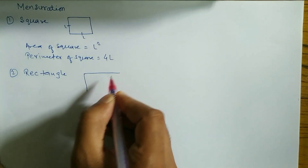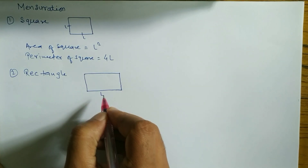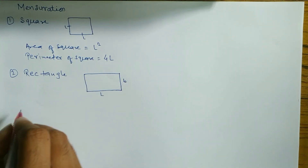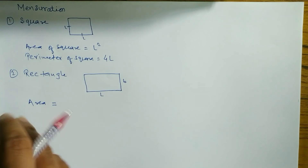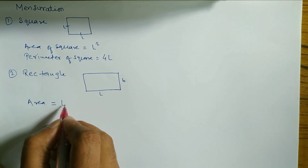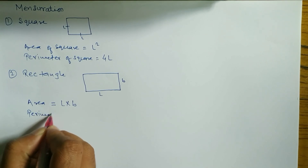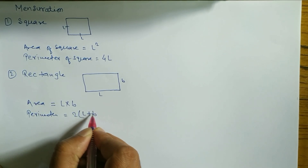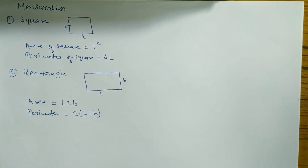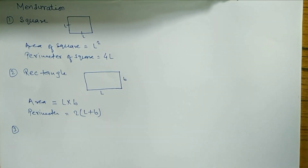Next is rectangle. By showing the diagram you can see a rectangle where length and breadth are not equal — this one is length and this one is breadth. Area of a rectangle formula is L into B. Perimeter of a rectangle formula is 2(L + B). Hope you understand this.